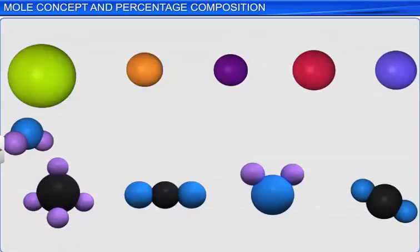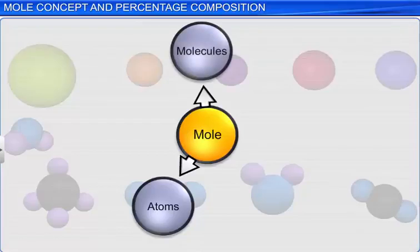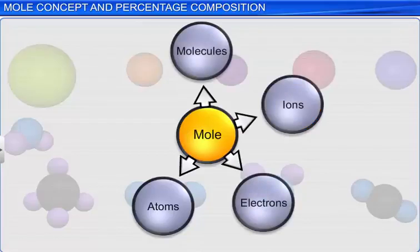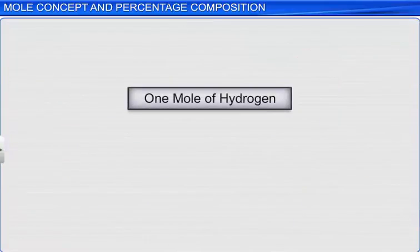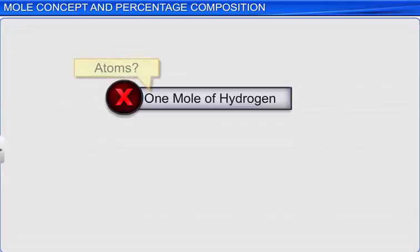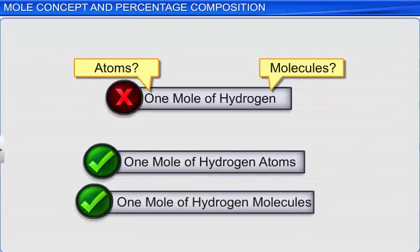The term mole is used to count particles such as atoms, molecules, ions, electrons, and protons. Hence, we must indicate the nature of the particle under observation. For example, saying one mole of hydrogen would be incorrect. We need to specify the entity we are referring to — that is, hydrogen atoms or hydrogen molecules. Thus, the correct term would be one mole of hydrogen atoms or one mole of hydrogen molecules.